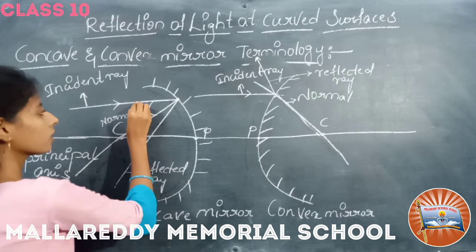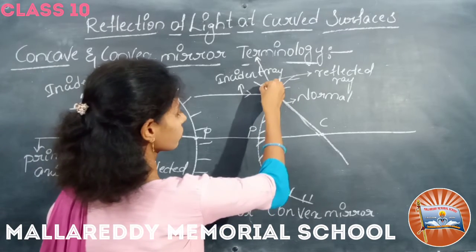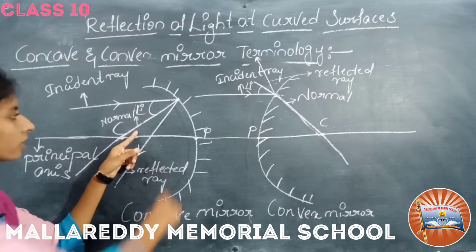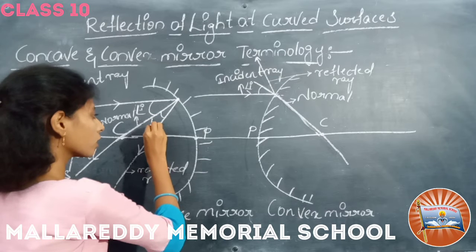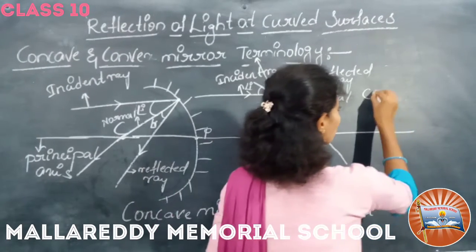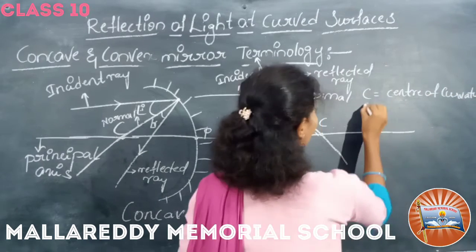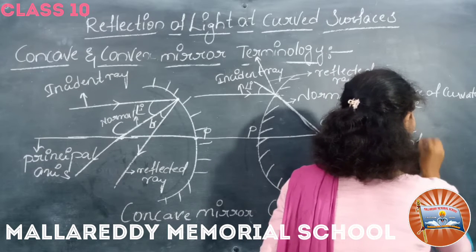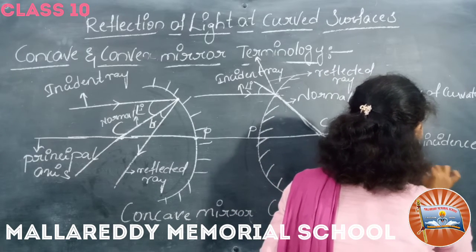The angle of incidence is represented by angle i. The angle between the reflected ray and the normal is the angle of reflection, represented by angle R. So to summarize: C is the center of curvature, P is the pole, angle i is the angle of incidence, and angle R is the angle of reflection.